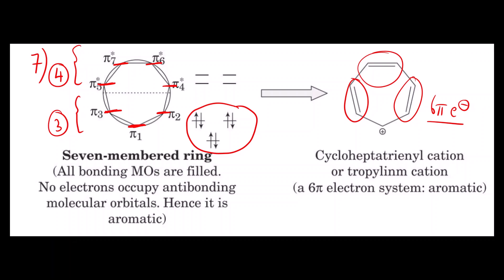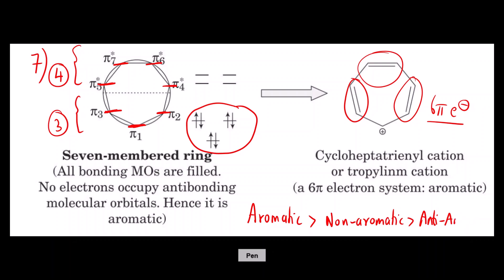We come to the end of this video. I hope you have understood the reason for the stability of aromatic and anti-aromatic compounds. Aromatic compounds are the most stable, then non-aromatic compounds, and anti-aromatic compounds are the least stable because of the presence of a diradical — unpaired electrons. Thank you so much.